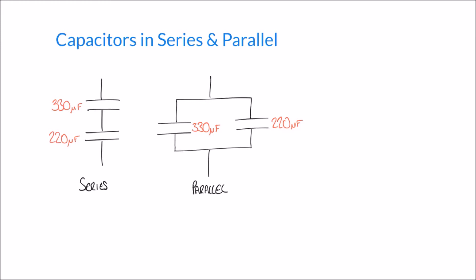In the case of parallel resistors, we had to use a different formula. We had to say that 1 over the total was equal to 1 over R1 plus 1 over R2, if those were resistors there.